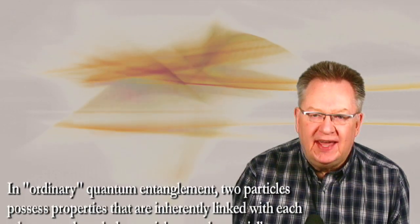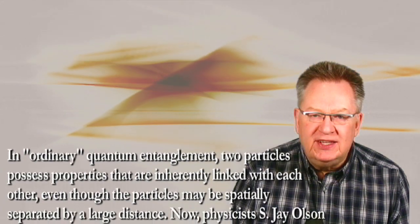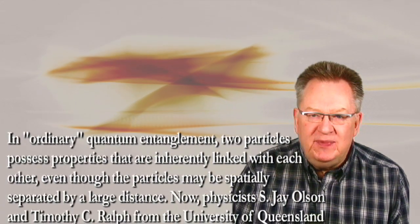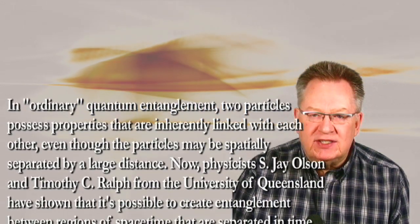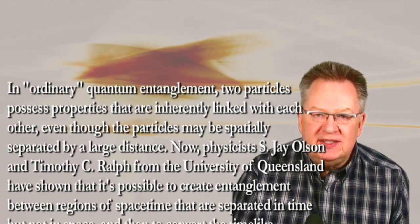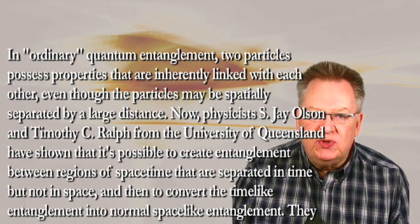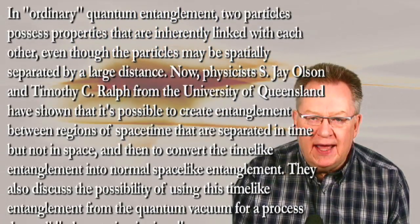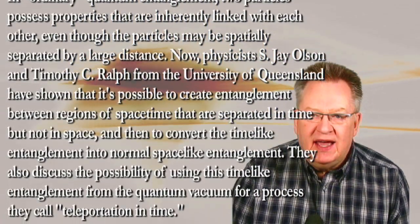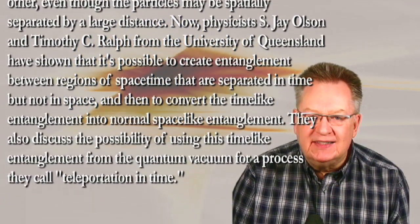In ordinary quantum entanglement, two particles possess properties that are inherently linked with each other, even though the particles may be spatially separated by a large distance. Now, physicists S.J. Olson and Timothy C. Ralph from the University of Queensland have shown that it's possible to create entanglement between regions of space-time that are separated in time but not in space, and then to convert the time-like entanglement into normal space-like entanglement.